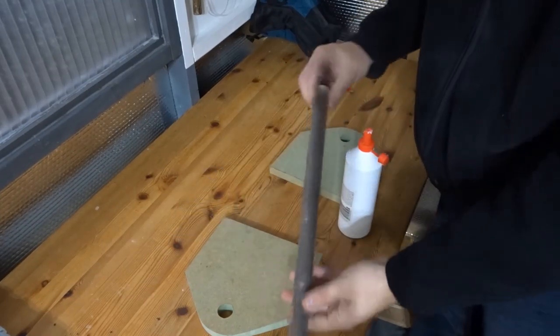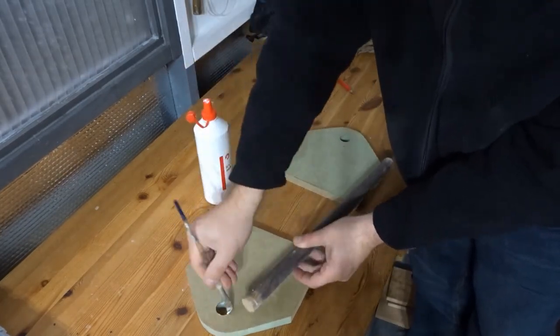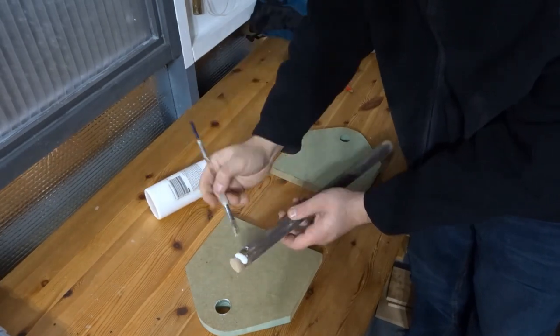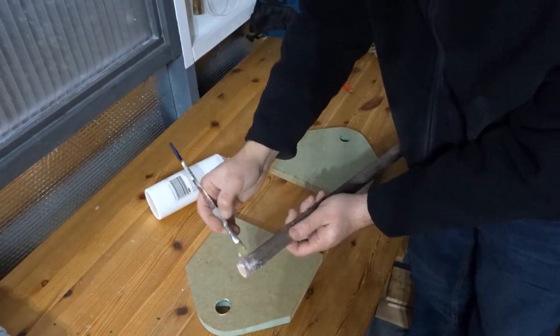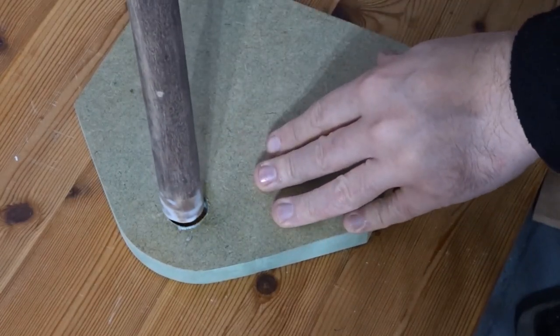Now I needed to glue that handle in to these two end pieces. I put plenty of glue in the hole and around the end of the handle. You can see I've sanded it down ready. It's a nice tight fit. Now I just need to hammer it in.